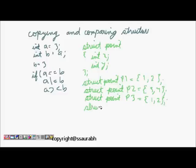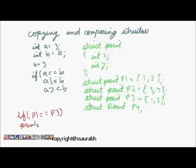And another struct point p4. So now the thing is p1 and p3 look equal to us, but can we directly write if p1 is equal to p3 then printf p1 is equal to p3? So can we write that? In fact it is not allowed in C.